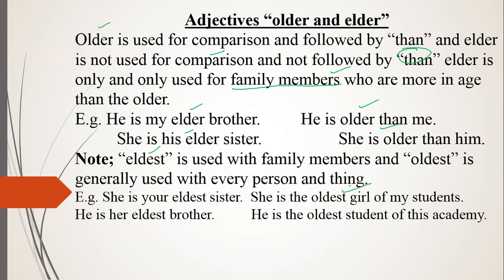If I say 'she is the oldest girl of my students,' it means we are comparing among students. Similarly, 'he is our oldest brother' refers to a comparison among brothers and sisters. And 'he is the oldest student of this academy' is again used for comparison. This is the difference between older/elder and oldest/eldest. Hope you got today's lecture — best of luck, see you next time, goodbye.